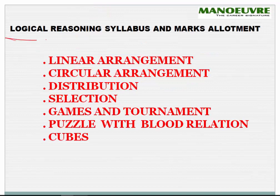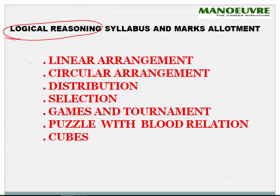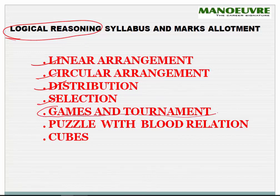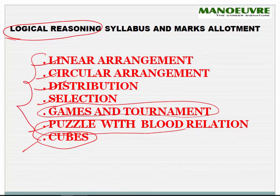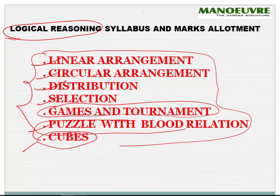These are the logical reasoning topics which come in CAT, especially the seating arrangement questions which are divided into linear arrangement, circular arrangement, then distributions and selection based questions. Games and tournament is one of the special areas, and then puzzles with blood relation questions and cubes — these are the areas which come in the logical reasoning part.